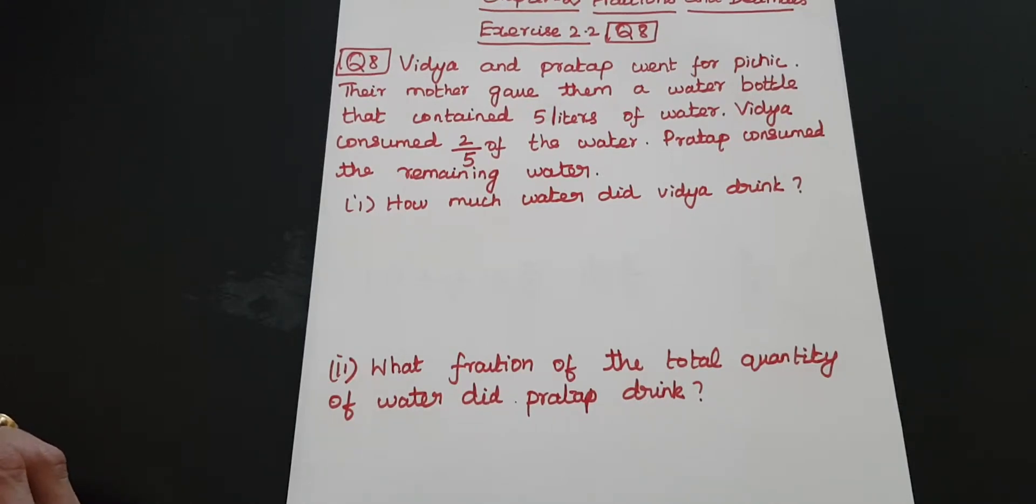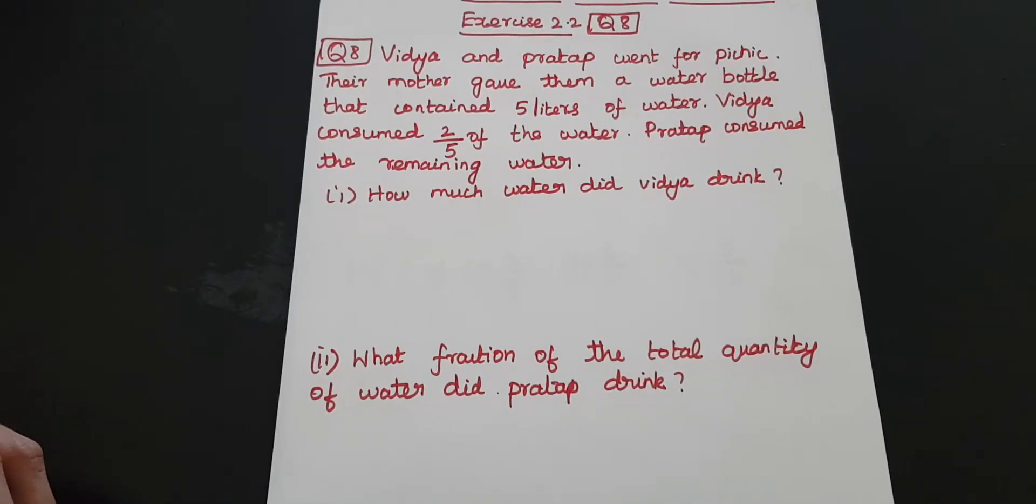Vidya and Prathap went for picnic. Their mother gave them a water bottle that contained 5 litres of water. Vidya consumed 2 by 5 of the water. Prathap consumed the remaining water. How much water did Vidya drink? What fraction of the total quantity of water did Prathap drink?